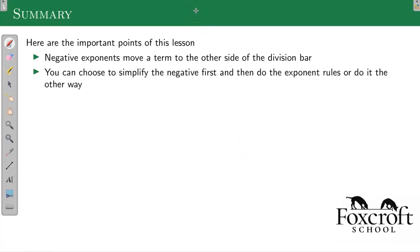It's a quick summary - negative exponents just move a term to the other side of the division bar. Right now it's just a definition. In the future we'll kind of see why this makes sense, but right now it's just a definition. And really, it doesn't matter what order you do things in, whether you use our exponent rules first and then negative exponents, or negative and exponent rules. Just make sure your final answer does not have any negative exponents in it at the end.